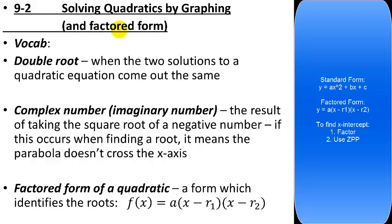First, a few vocab words. Double root: when you're graphing a quadratic, sometimes the two solutions come out to be the same number — if that's the case, you get a double root. Typically you'll get either two answers, one answer, or zero answers. If you get only one answer — the same answer twice — it's called a double root.